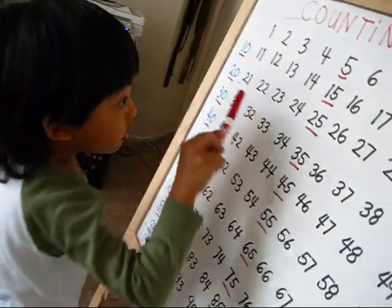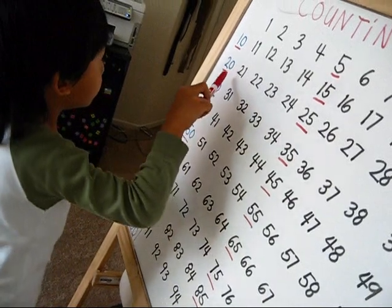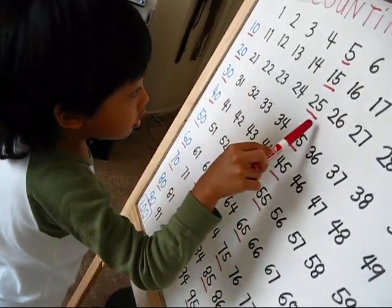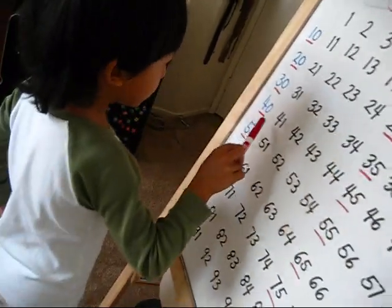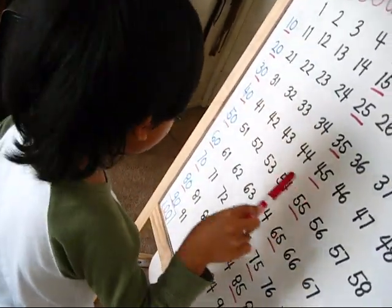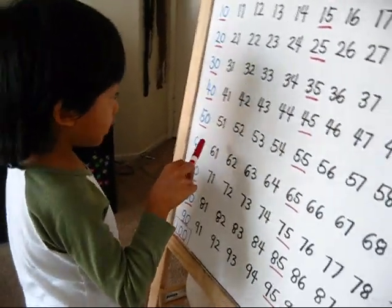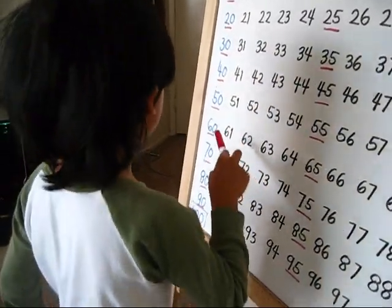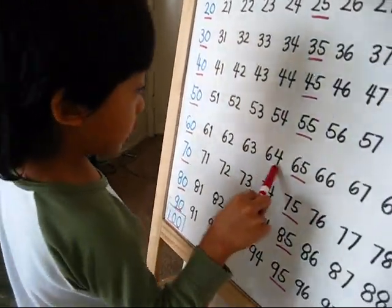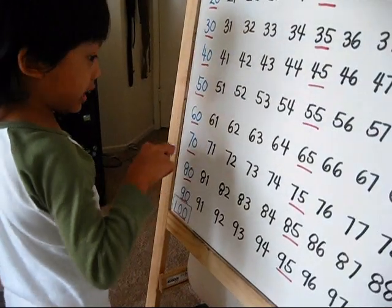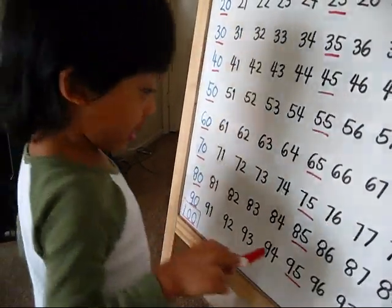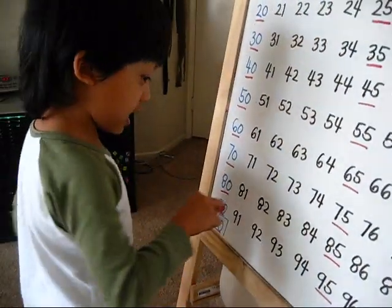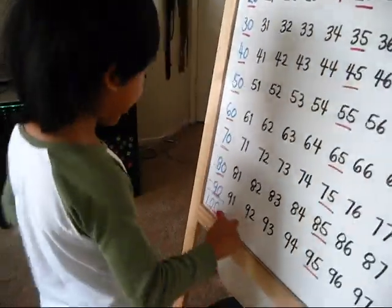5, 10, 15, 20, 25, 30, 35, 40, 45, 50, 55, 60, 65, 70, 75, 80, 85, 90, 95, 100. Yay!